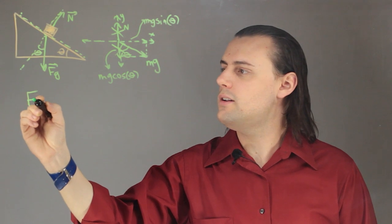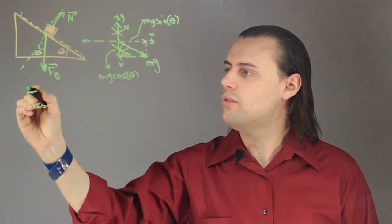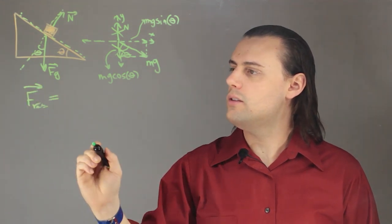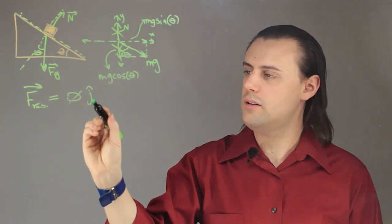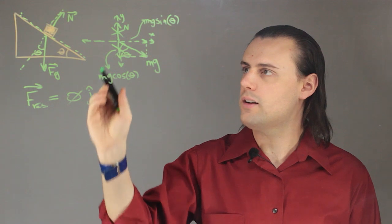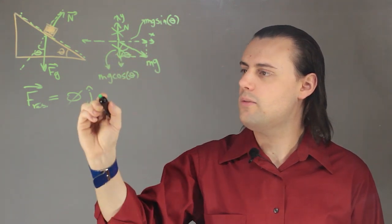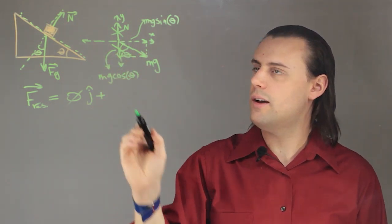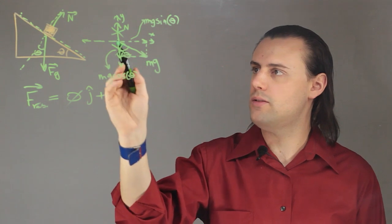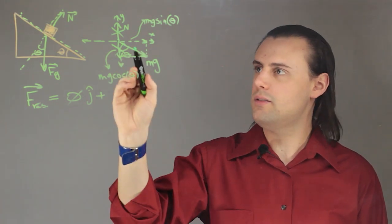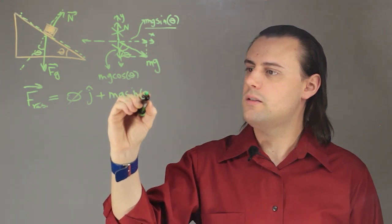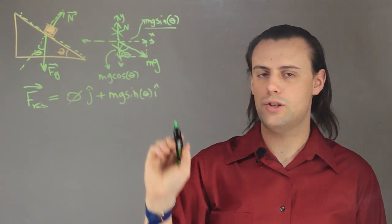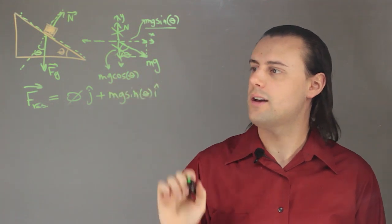So my net or resultant force vector is going to have a zero vertical component. This is j-hat, the unit vector that lies along the y-axis plus the sum of all the x components of my vectors. In this case there's only one mg sine theta times i-hat which is the unit vector along the x-axis.